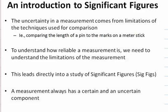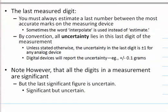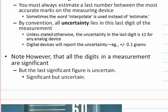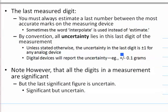And so we want to always record the appropriate number of sig figs, indicating that a measurement always has a certain component and an uncertain component. And that uncertain component is always the last sig fig. So that last significant figure tells us where our degree of uncertainty lies.